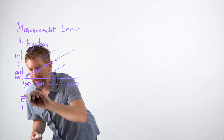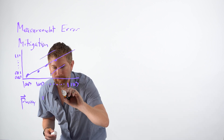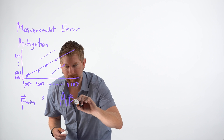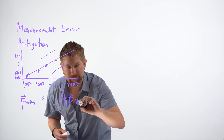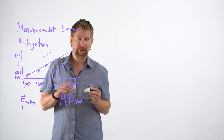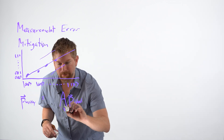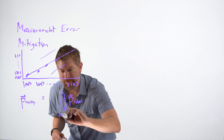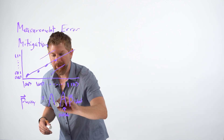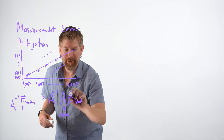Our probabilities of the noisy system equal a matrix A times the probability of our ideal system — our ideal system being the classical system that we prepared that has nothing to do with quantum control errors or any other uncertainties. So we can calculate this A matrix, which is the classical process through which our noise enters the system, and we can imagine we could just invert it and get the ideal outcome that we wanted.